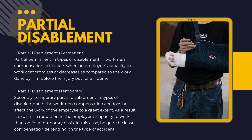Moving further, the second type of disablement is partial disablement, which also has two subcategories: partial permanent disablement and partial temporary disablement. Partial permanent disablement occurs when an employee's capacity to work decreases as compared to the work done before the injury, but for a lifetime. For example, if Rahul is a data entry operator and loses his left hand in an accident —